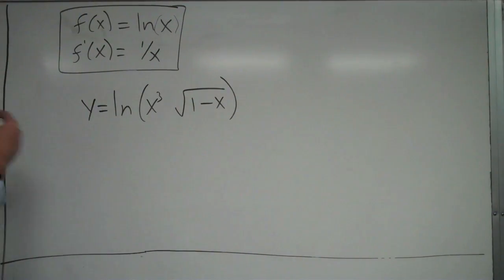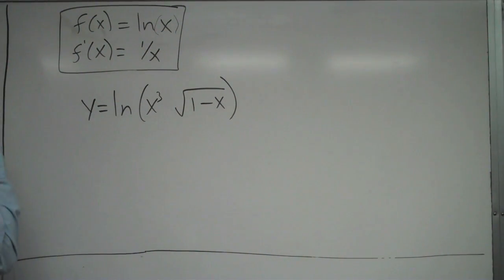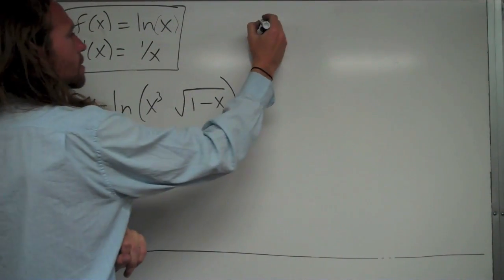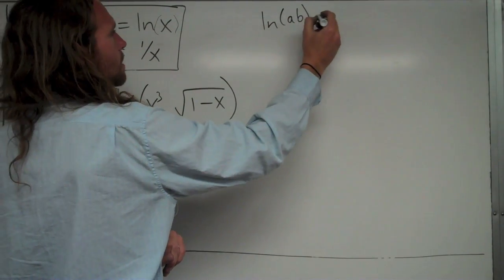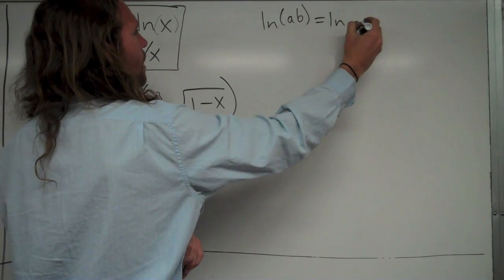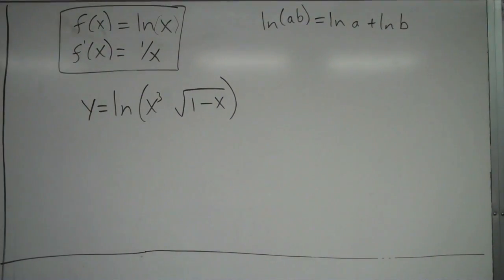So one option I could have here is to use my natural log rules first to expand this out. So first I can use the natural log rule, the one that's ln of a times b is equal to ln of a plus ln of b. All right, so that was the rule that I learned.